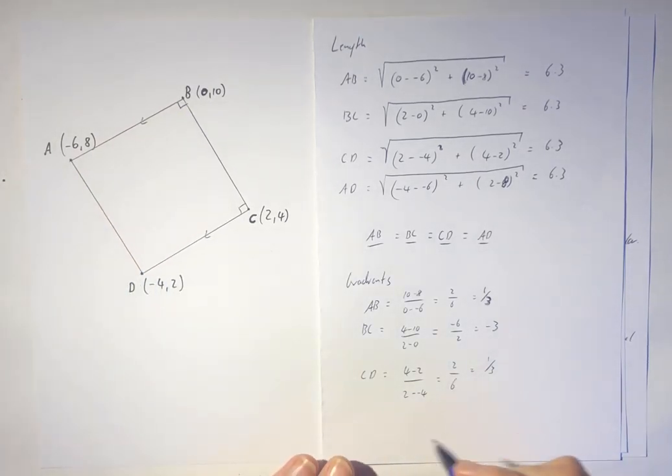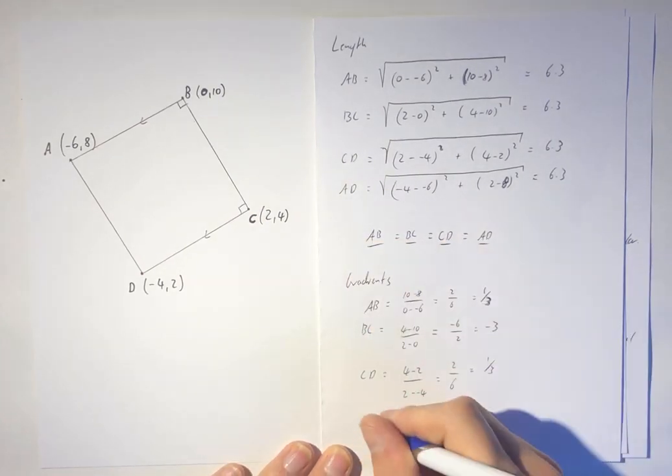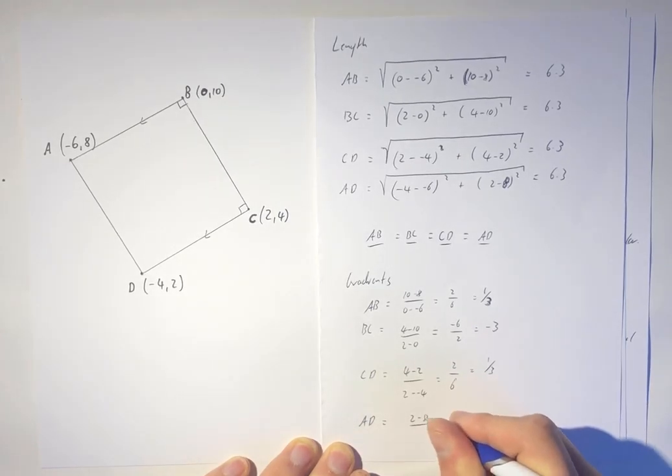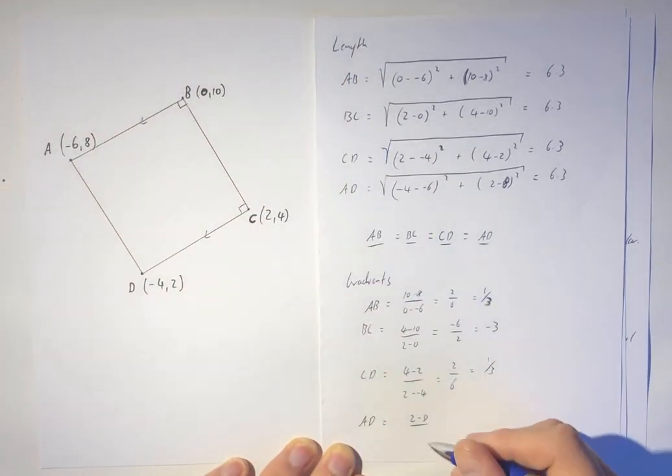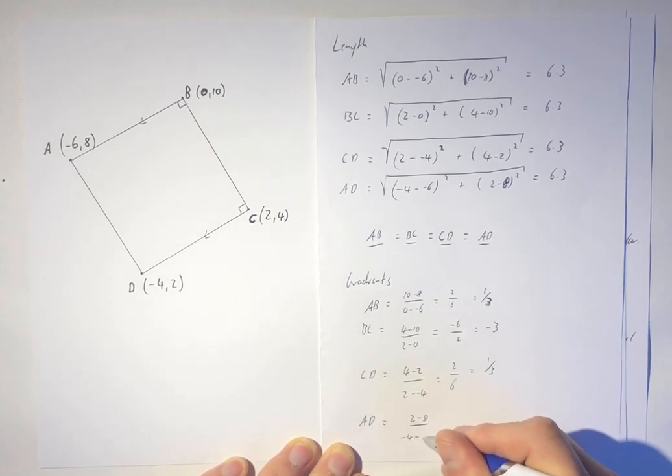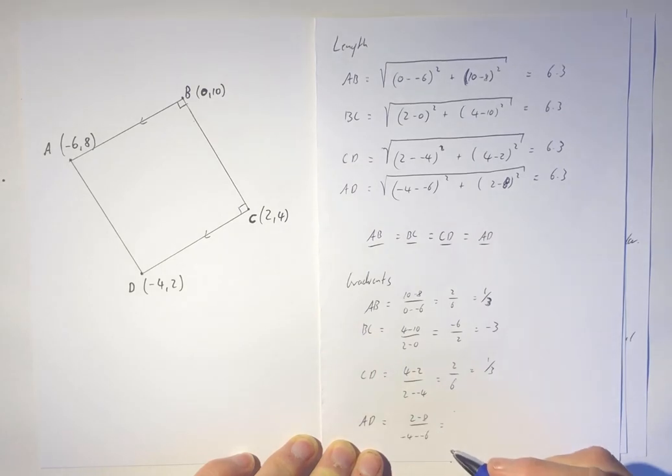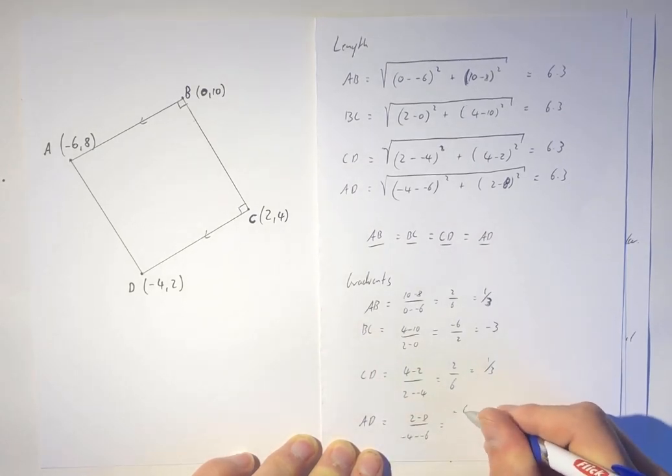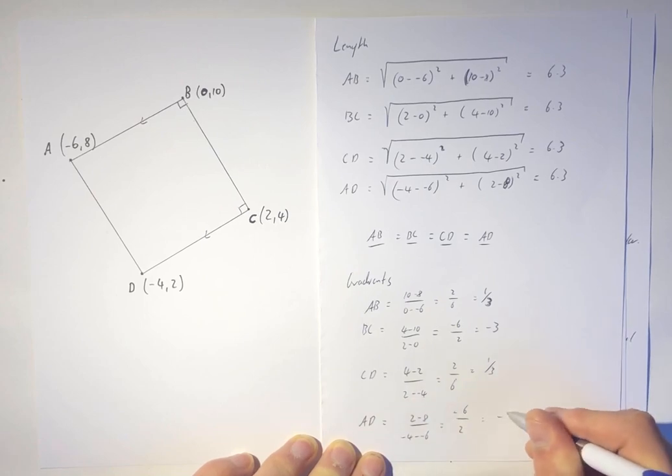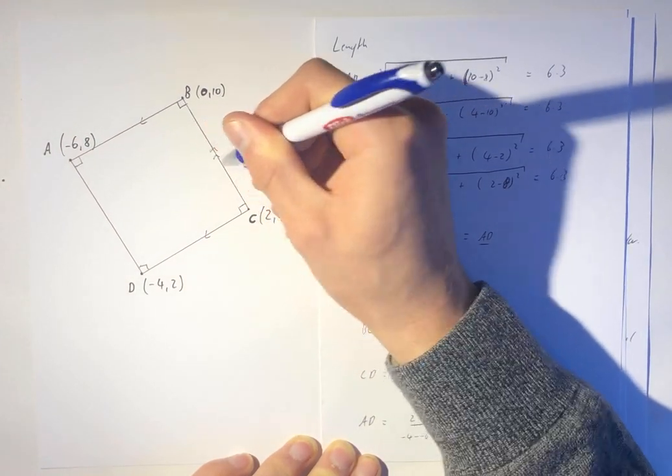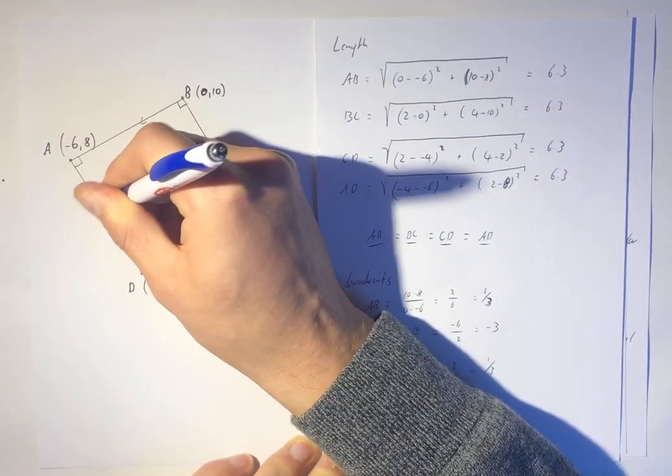So we've got one more gradient to do, AD, and so that's going to be the rise, so 2 minus 8, so that's going to be negative, and that makes sense we've got a negative gradient, it's going down. 2 minus 8 over negative 4 take away negative 6, well that's going to be negative 6 over 2, so negative 3. So that's perpendicular, which means that's also going to be perpendicular, these are also parallel, and they are all the same length.